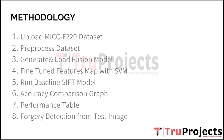The fourth step is to fine-tune feature maps with SVM. The model is fine-tuned using Support Vector Machines, a powerful machine learning algorithm used for classification tasks. By fine-tuning the feature maps with SVM, the model learns to distinguish between forged and non-forged images more effectively. The fifth step is to run the baseline SIFT model — Scale Invariant Feature Transform — for comparison purposes, which is a popular image processing technique used for keypoint detection and feature extraction.